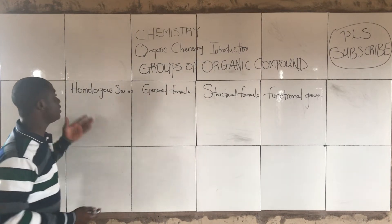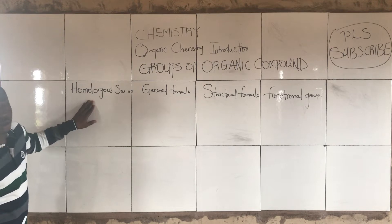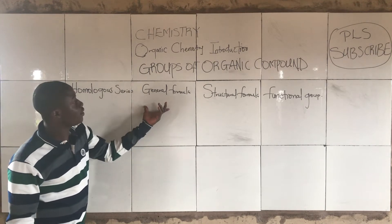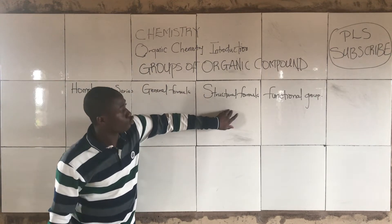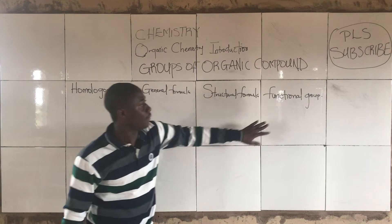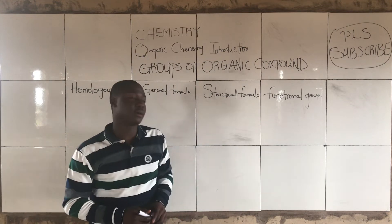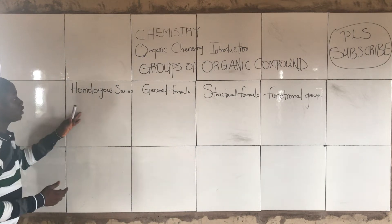You can see this table here. This is the homologous series, this is the general formula, this is the structural formula, and this is the functional group. Now let's talk about the homologous series.